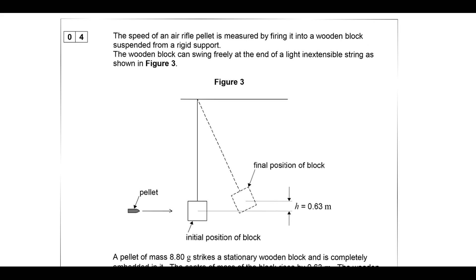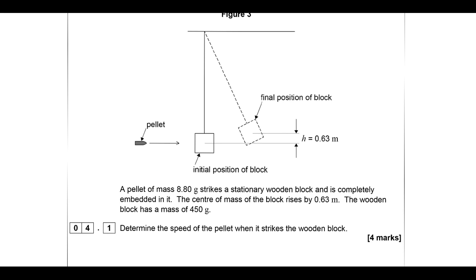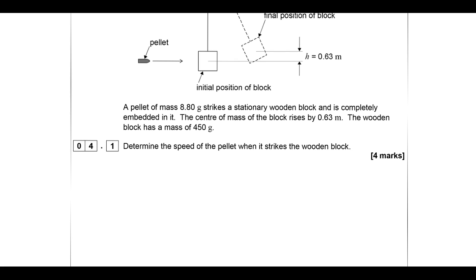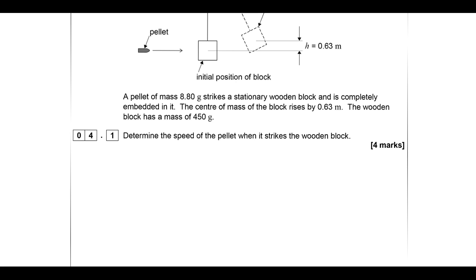The speed of an air rifle pellet is measured by firing into a wooden block suspended from a rigid support so the whole system can swing freely on a string - this setup is called a ballistic pendulum. The pellet comes in, collides with the block, and transfers its kinetic energy and momentum to the block-bullet system, causing the block to rise by a displacement of 0.63 m. A pellet of mass 8.8 g strikes a stationary block and is completely embedded in it; the wooden block has a mass of 450 g.